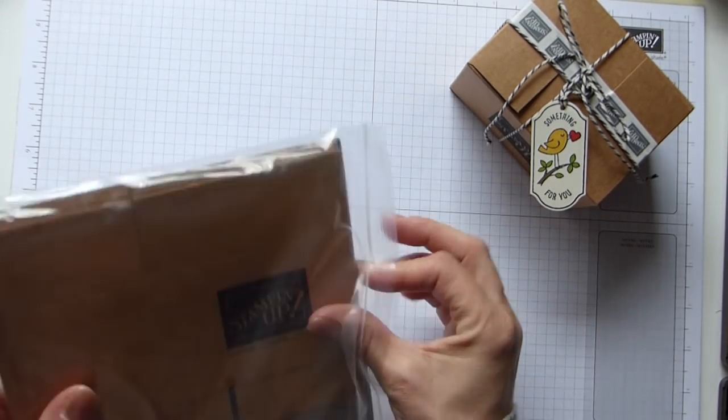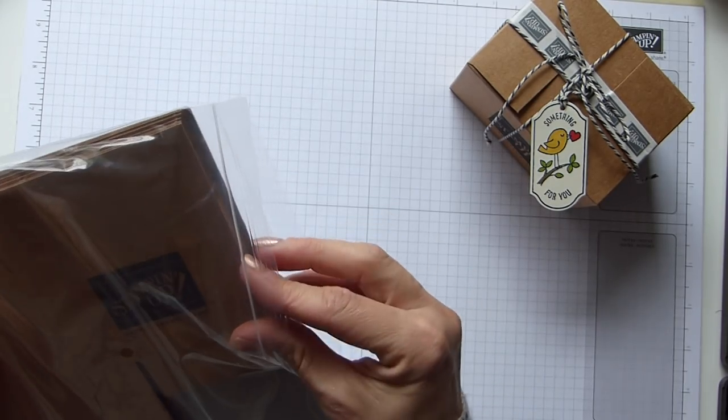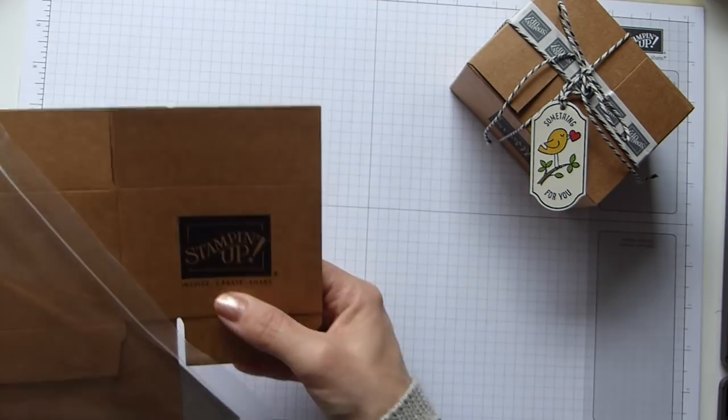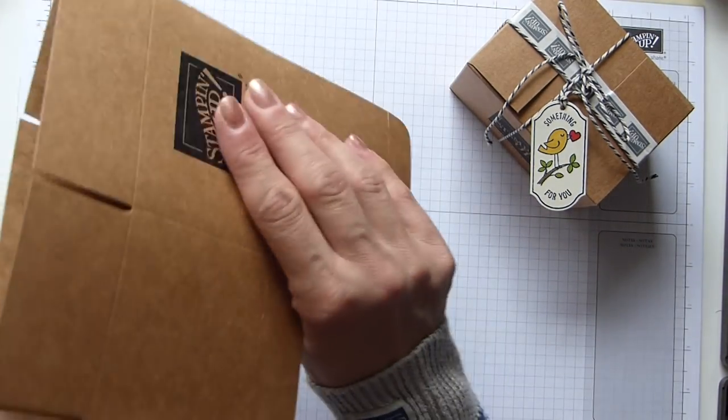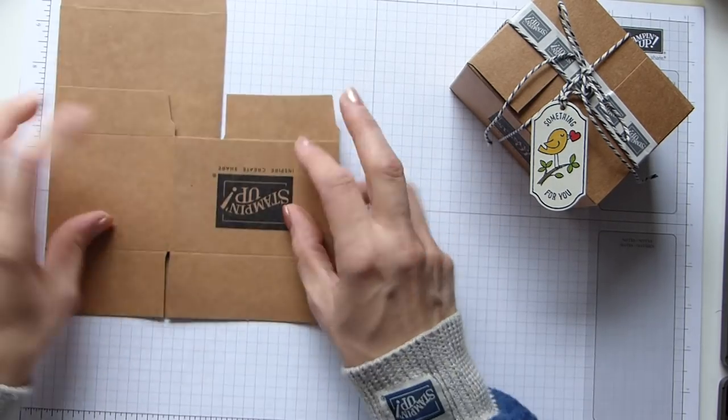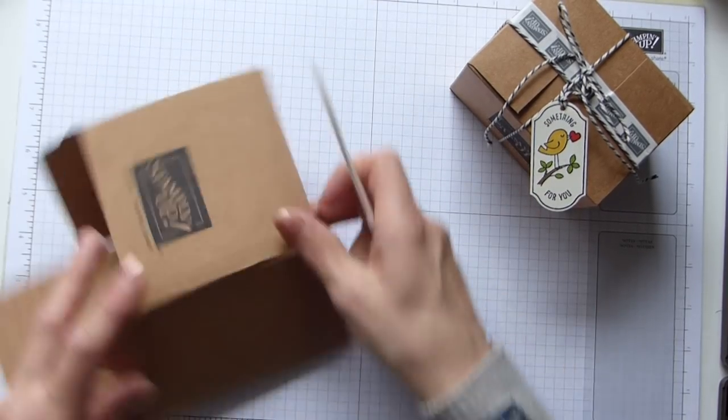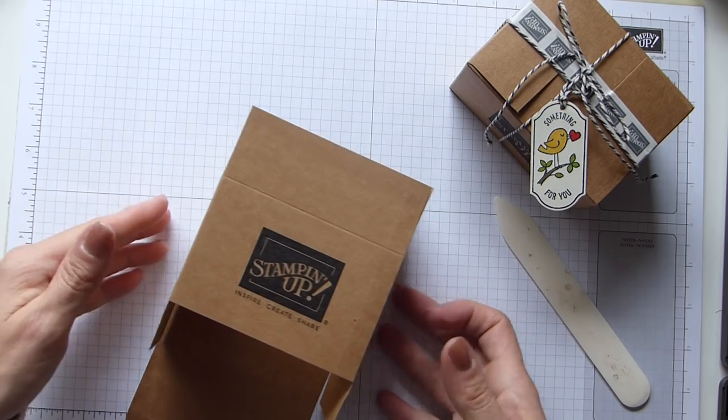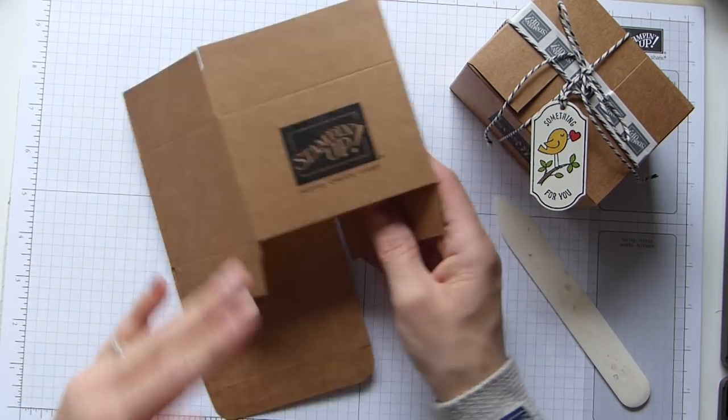They come flat, so it's nice and easy to send. Just like we do with our acetate boxes, they just need bending the opposite way. I'm going to grab my bone folder and just reinforce those the opposite way. You've got your logo to know which way up they need to go.